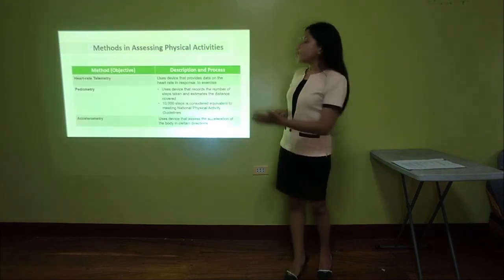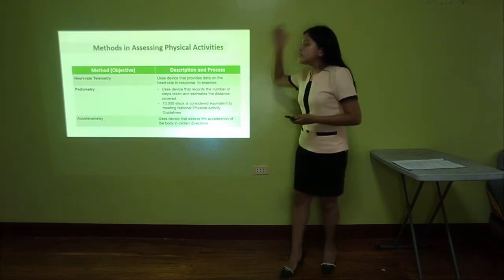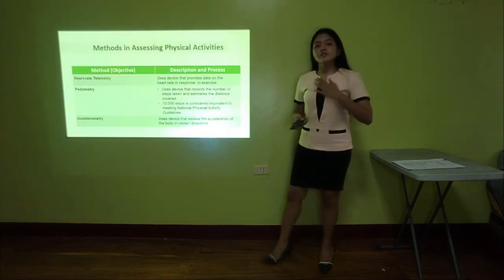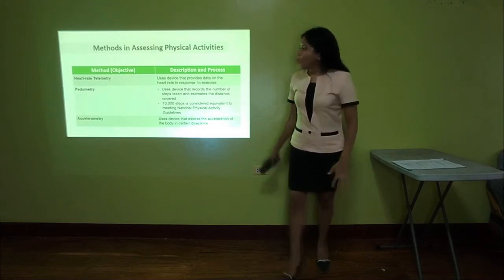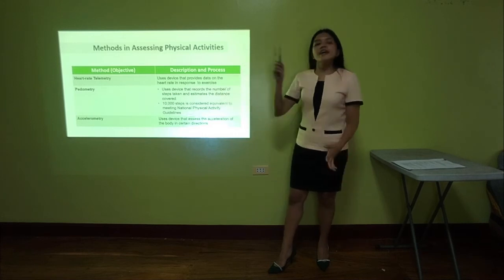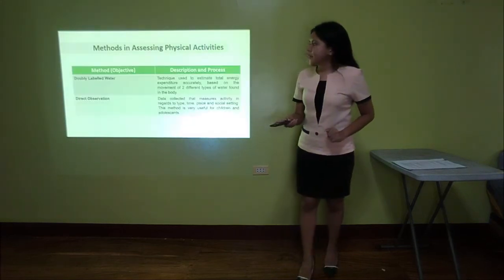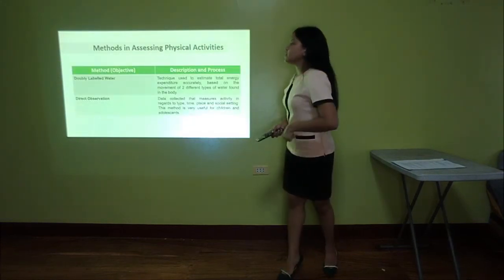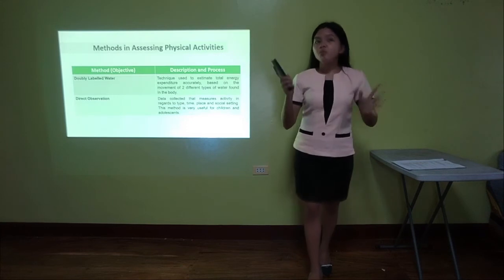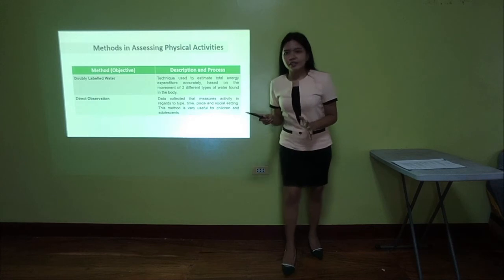We also have objective methods, which use devices: heart rate telemetry, pedometry, and accelerometry. For heart rate telemetry, the keyword is heart rate. For pedometry, the keyword is number of steps. For accelerometry, the keyword is acceleration. The next methods are doubly labeled water and direct observation. For doubly labeled water, the keyword is water. And direct observation means it's a case study.